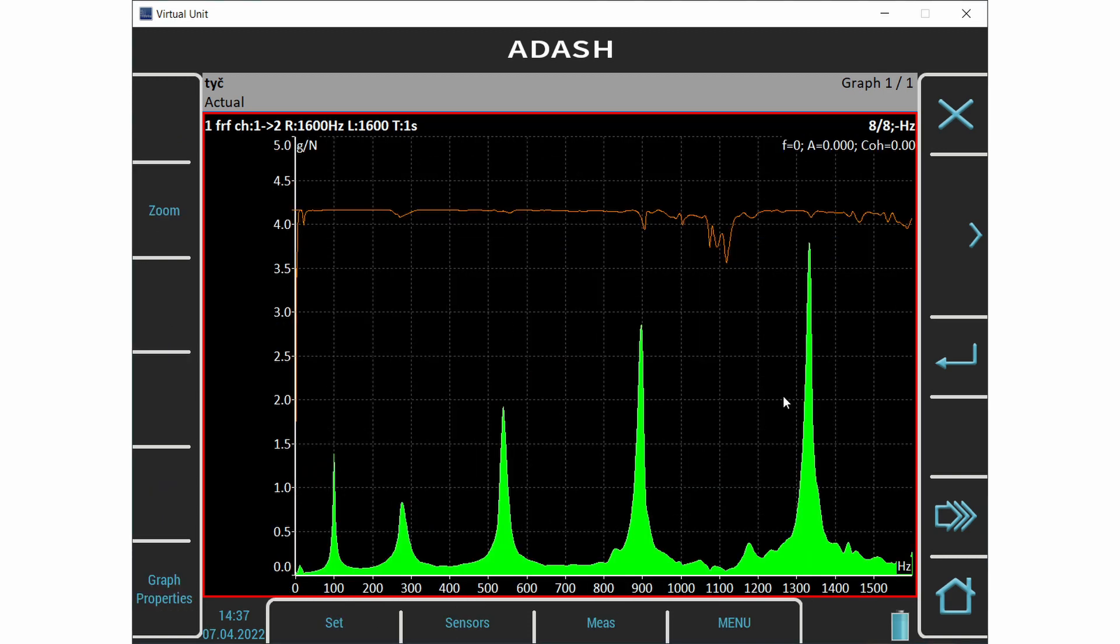We start the measurement again and we make the averaging. We can see the frequency response function. There are 5 resonant frequencies. The coherence is near value 1. It means all measurements in averaging were stable on these resonant frequencies and we can trust and use them.